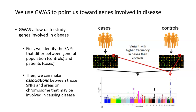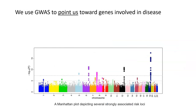We call this an association study because it is not causative — all we can do is make an association between a SNP and an area on a chromosome that might be causing disease. We know the SNP is present, we know more patients have these SNPs, and we can look in that area of chromosome 6, 12, or 19 to see what genes lie there. GWAS is a great starting point to give us an idea of where to look for genetic components of disease.